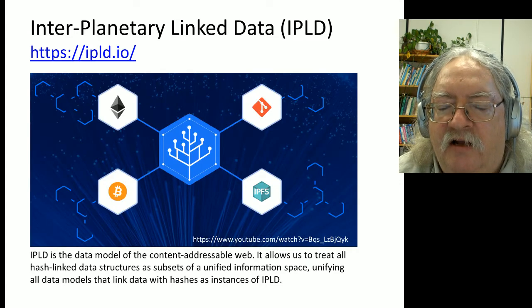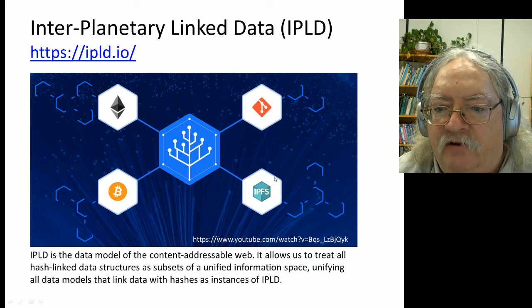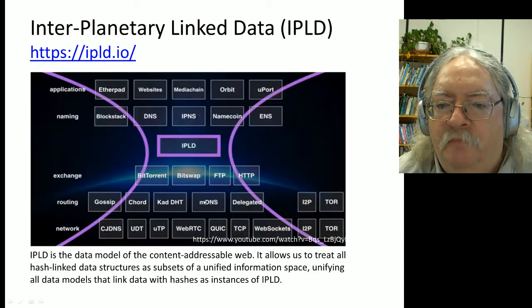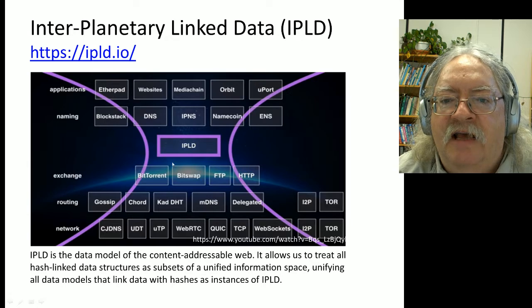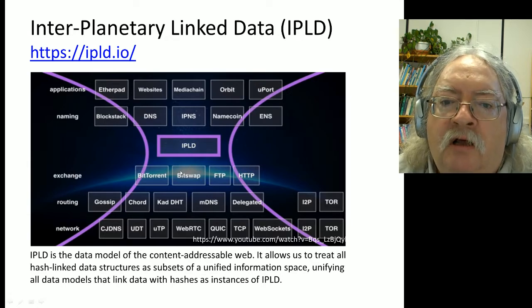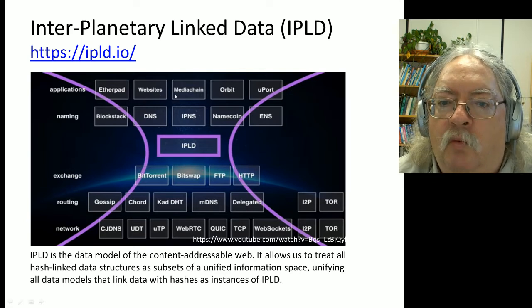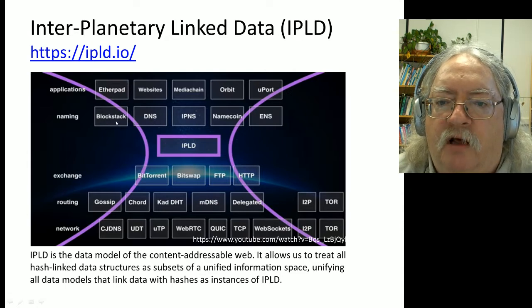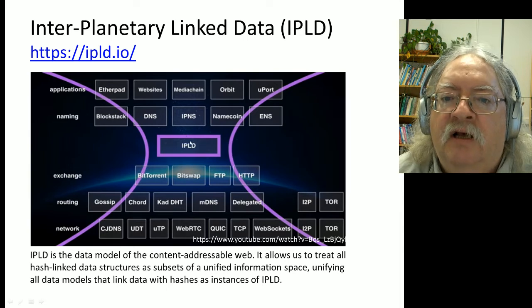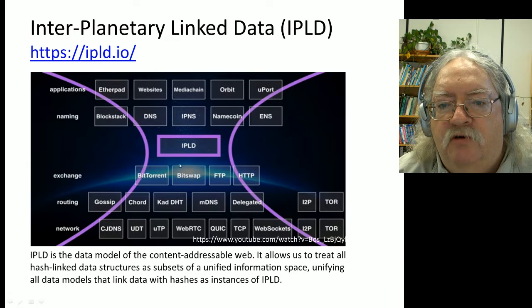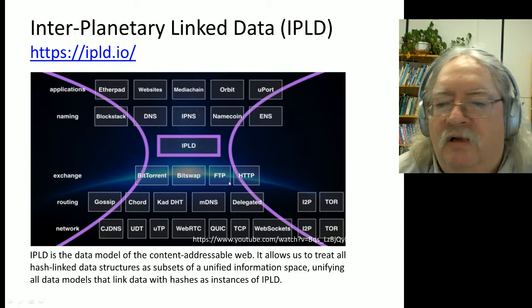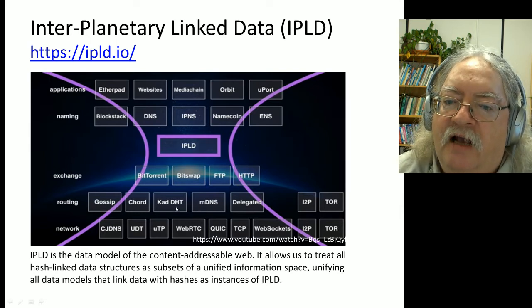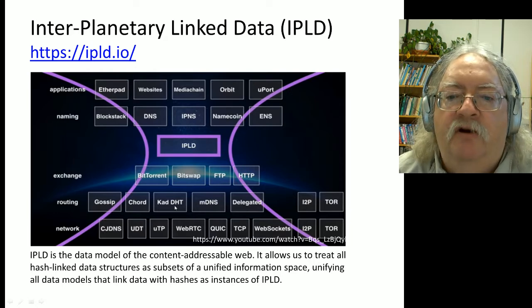Interplanetary Linked Data is important because not only does it link the Interplanetary File System and D-Web content, it also links things like GitHub, like Ethereum, and like Bitcoin. The idea is that it stands at the center of what we call an hourglass model, where at the top we have the applications - websites, media chain, etc. - then the naming protocols like the domain name service, block stack for blockchain, or the Interplanetary Naming Service. Then underneath, the exchange protocol - BitTorrent, BitSwap, or other kinds of protocols - and then underneath that, the different kinds of routing and network protocols that manage distribution of content peer to peer.